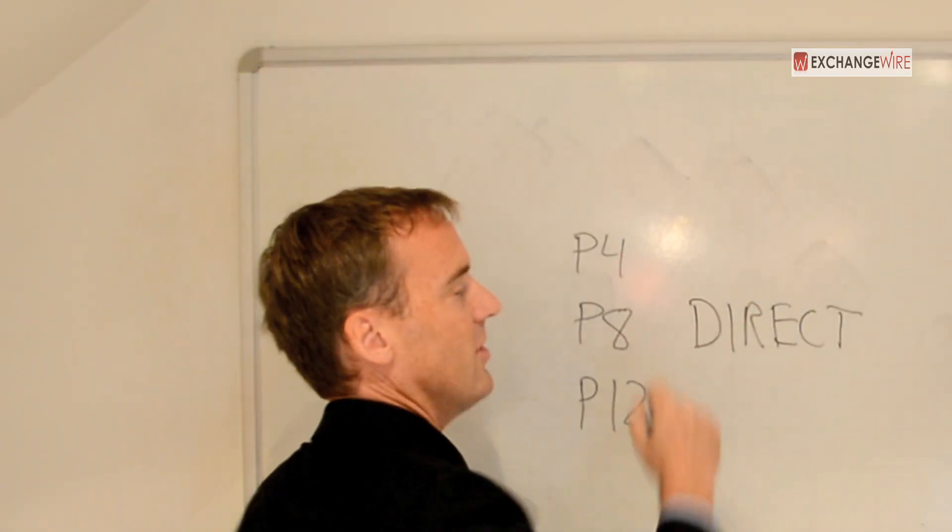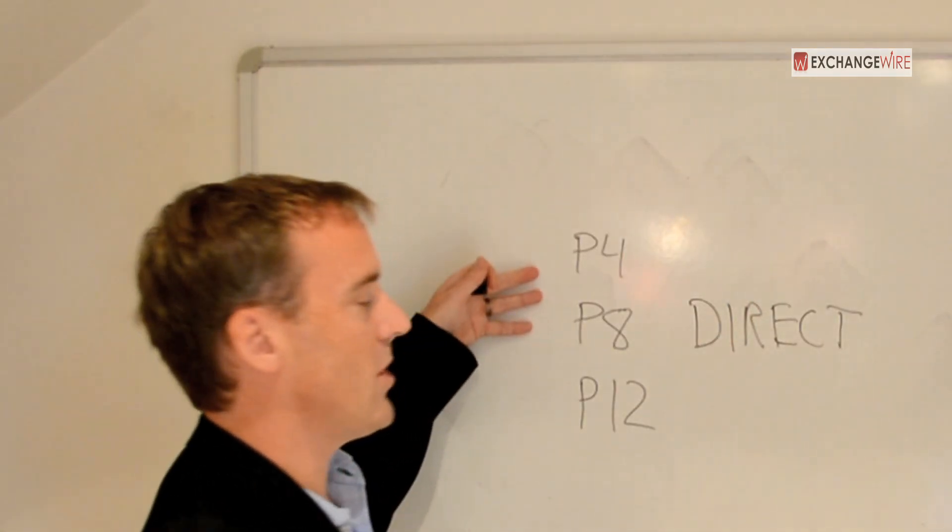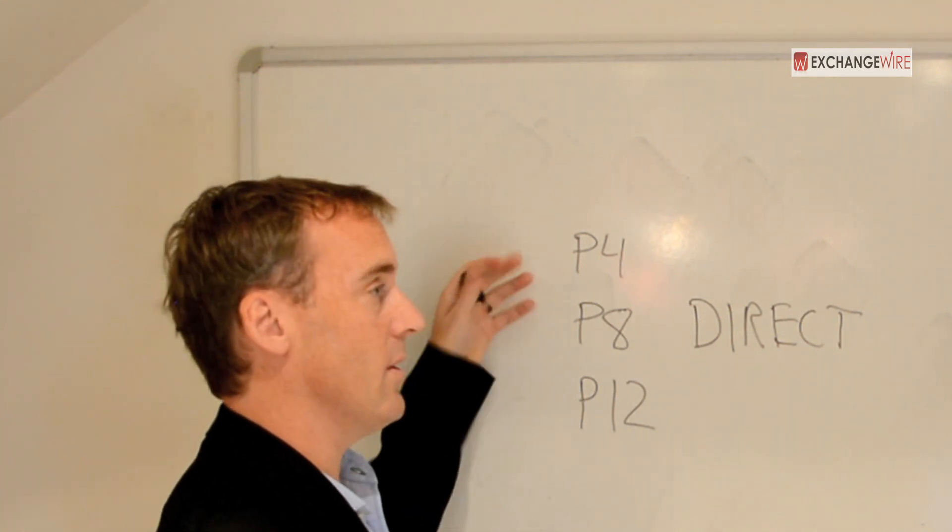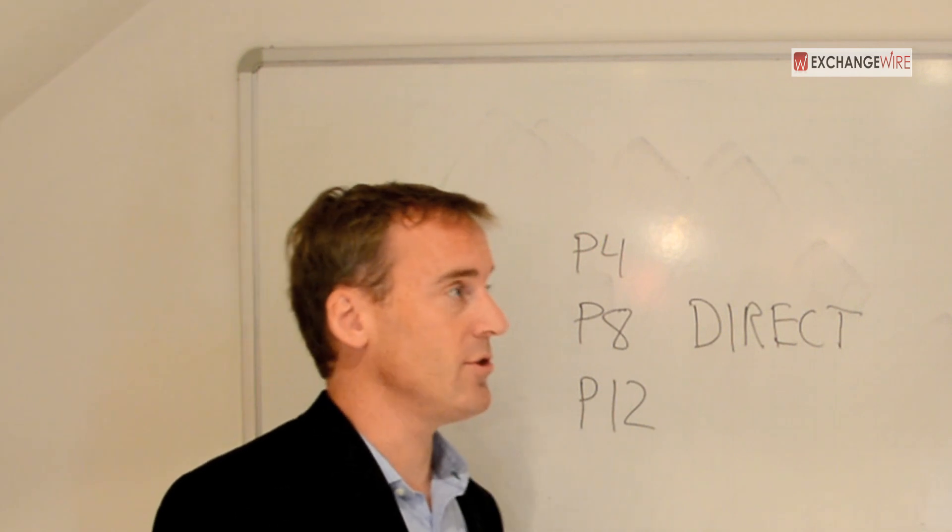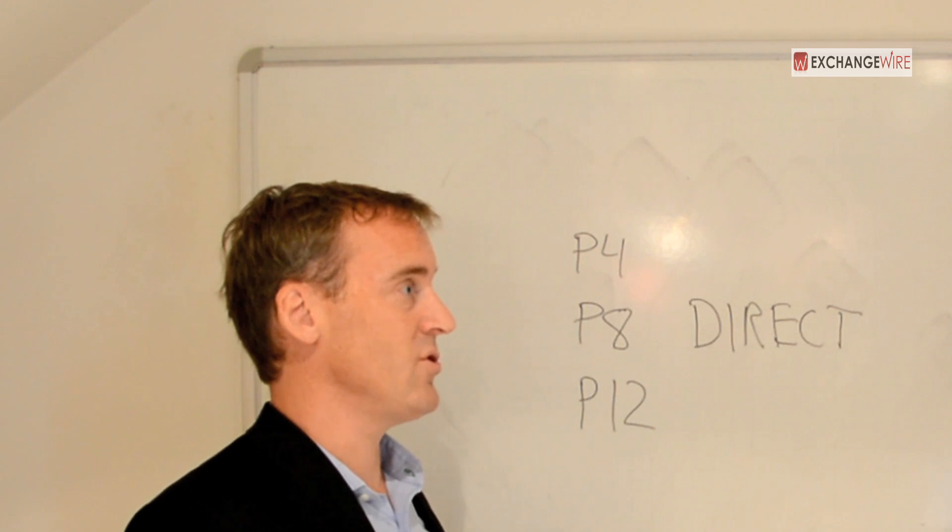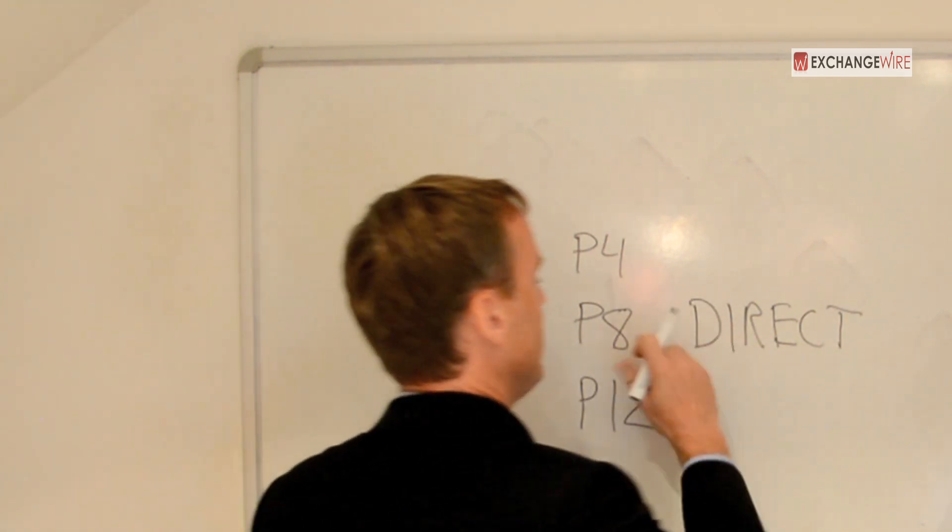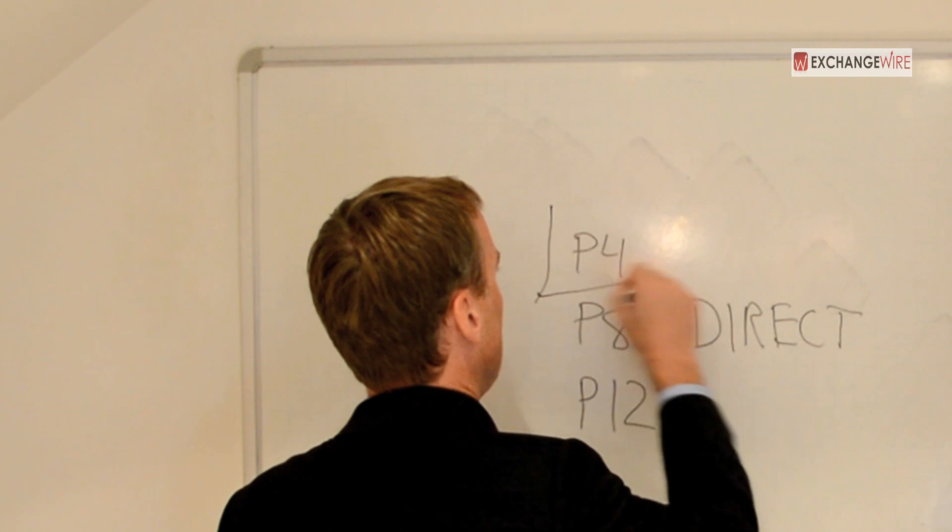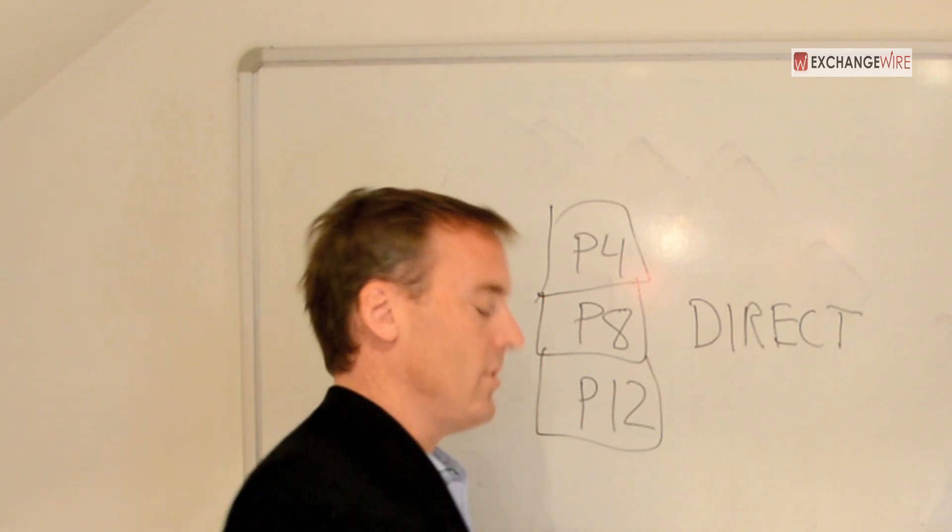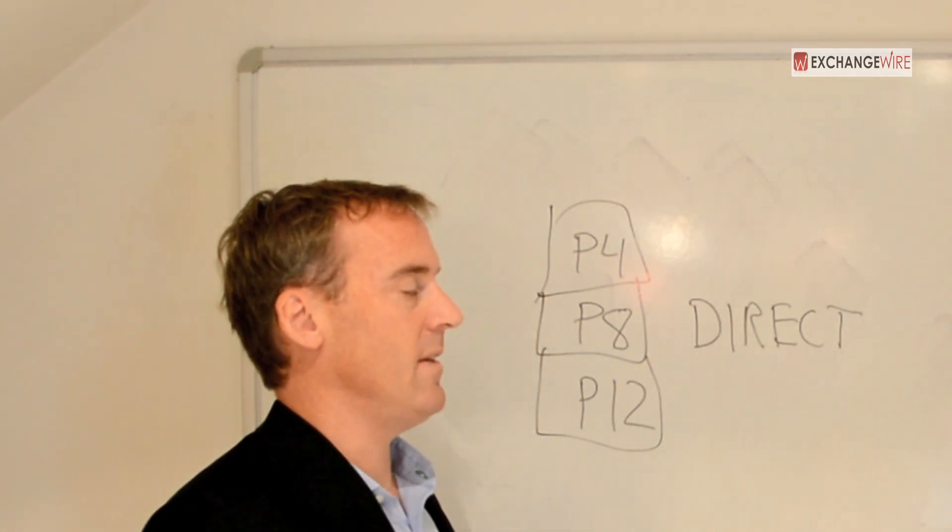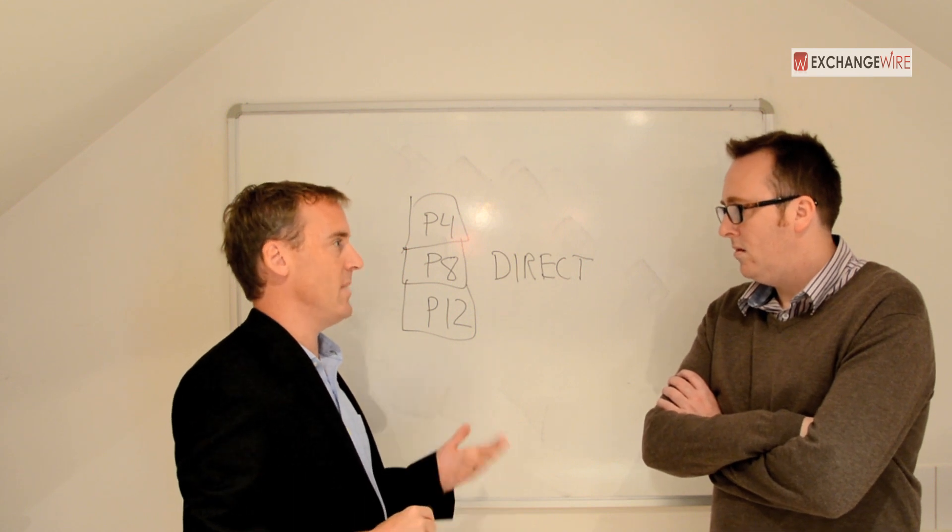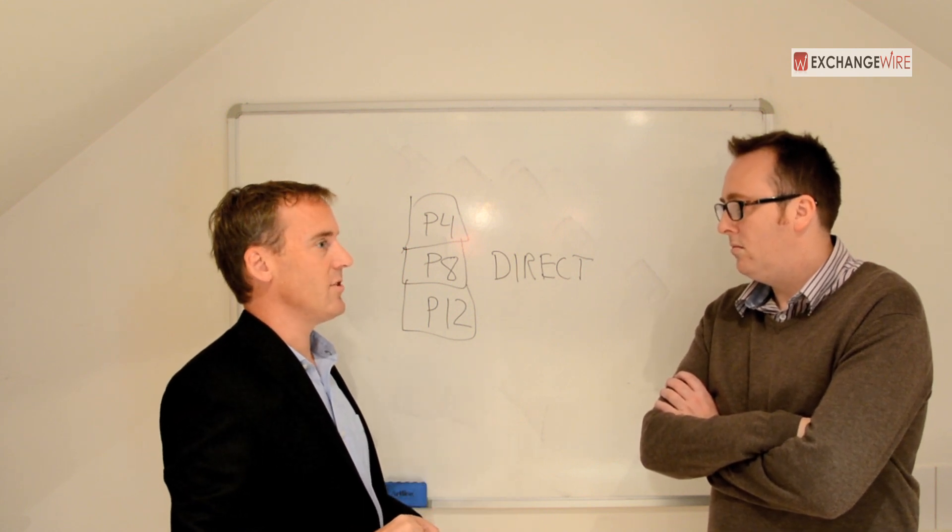And traditionally an SSP is down here. And then sponsorship is up here. So as publishers start to work directly with buyers to strike deals at scarcer deals. The buyers say, I really only want 5% to 7% of your inventory. The publisher needs to know how best to break that up. Direct sold values inventory differently than the indirect channel. Direct sold are using different mechanisms to measure. They are using different targeting criteria.